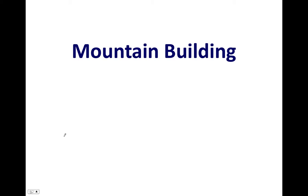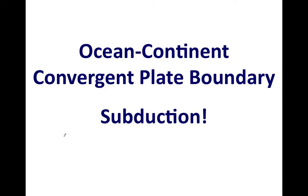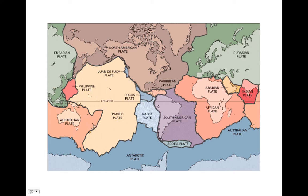Now we're going to look at mountain building. Mountain building occurs any time you have a convergent plate boundary. In the case of oceanic-continental convergence, we have subduction, and most of that oceanic-continental subduction occurs along the edge of the Pacific Ocean basin. Whenever we have oceanic lithosphere converging with continental lithosphere, the thick continental lithosphere gets deformed and crumpled up, creating topography like mountains. The volcanoes also form volcanic landforms that contribute to the mountains, and the emplacement of large volumes of molten rock from volcanism also thickens the crust and adds to the formation of mountains.